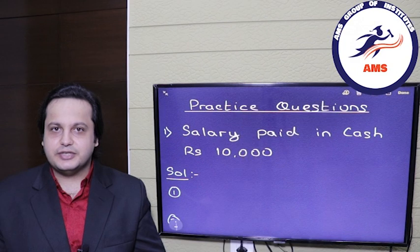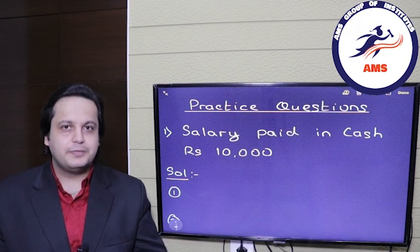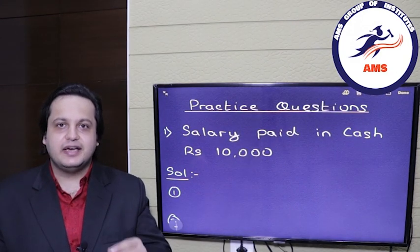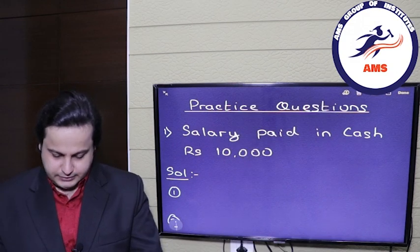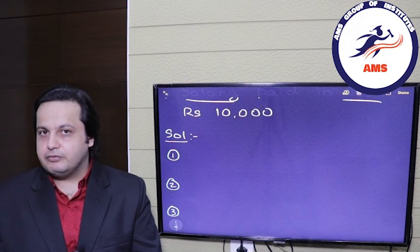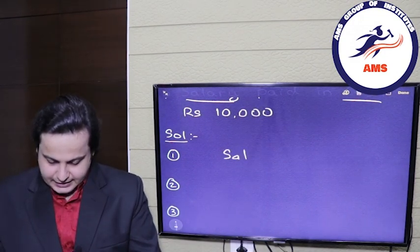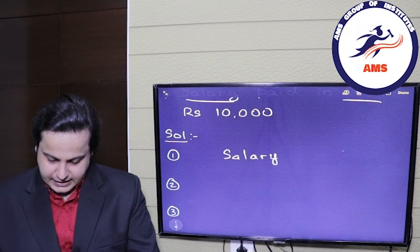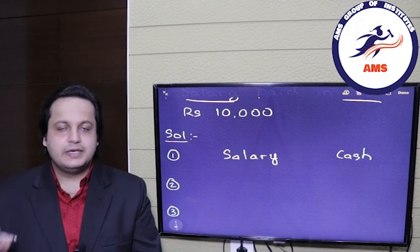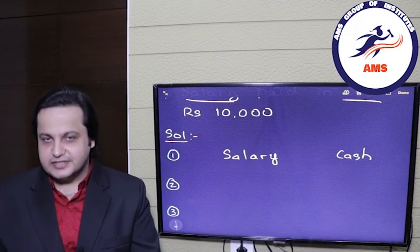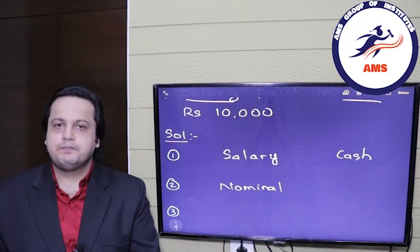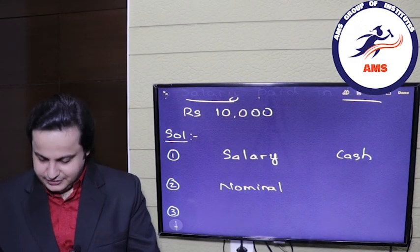Question one: salary paid in cash, rupees 10,000. Step one — identify the accounts involved. There are two accounts: salary and cash. Step two — identify the types of accounts. Salary is a nominal account because it is a business expense. Cash is a material asset of the business, so it is a real account.